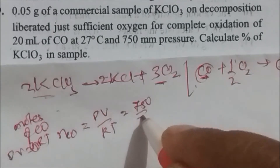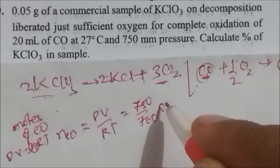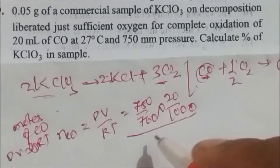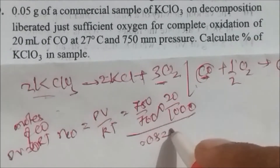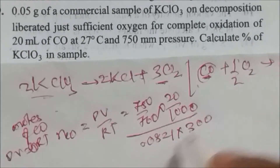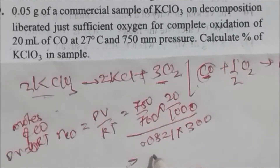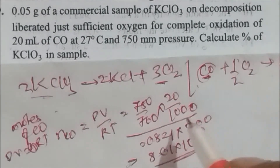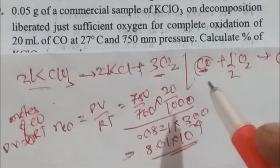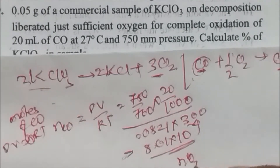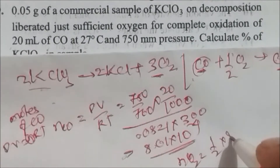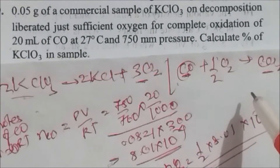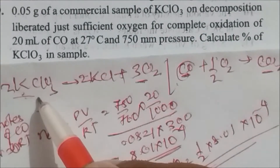P = 750/760 atm, V = 20/1000 L, R = 0.0821 L·atm/mol·K, and T = 300 K. Solving gives moles of CO = 8.01 × 10⁻⁴. Since 1 mole CO requires half a mole of O2, moles of O2 = ½ × 8.01 × 10⁻⁴.